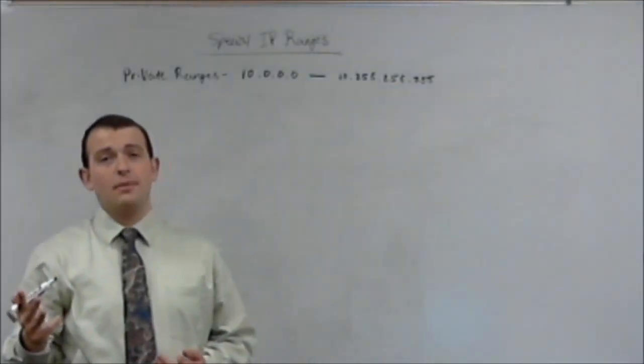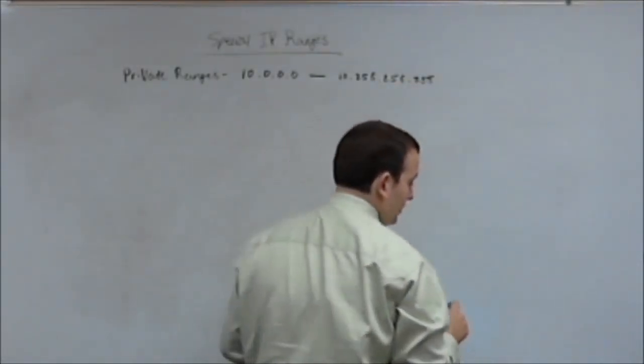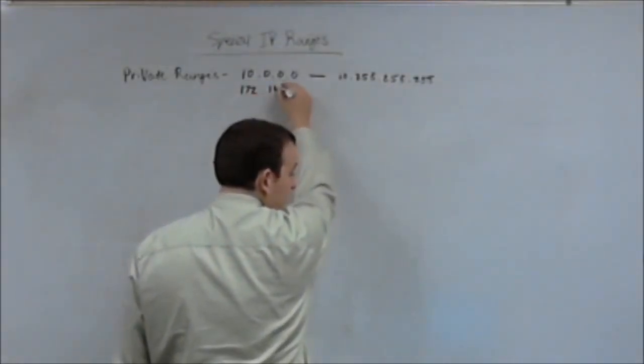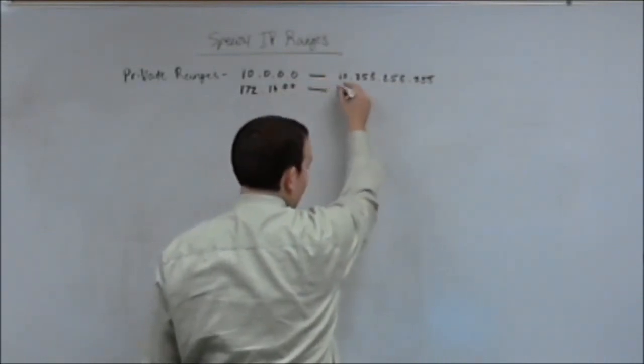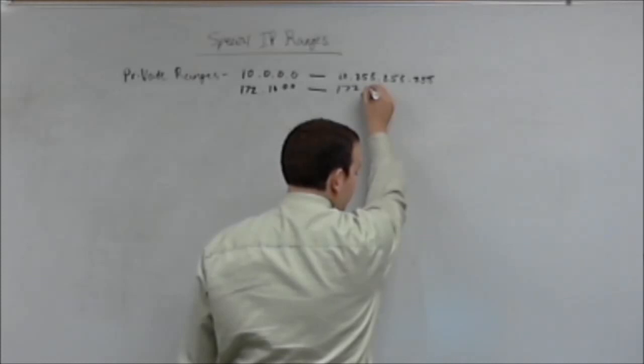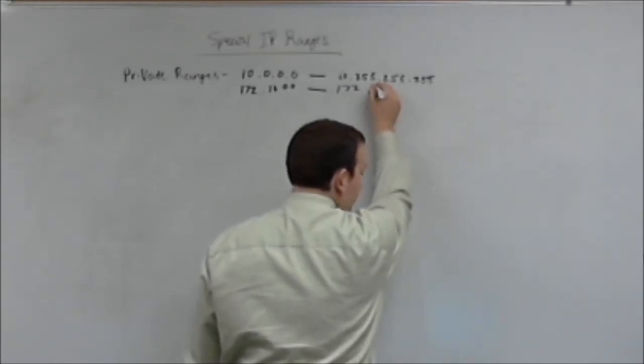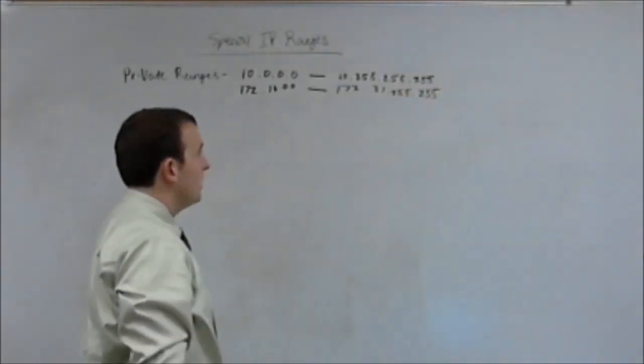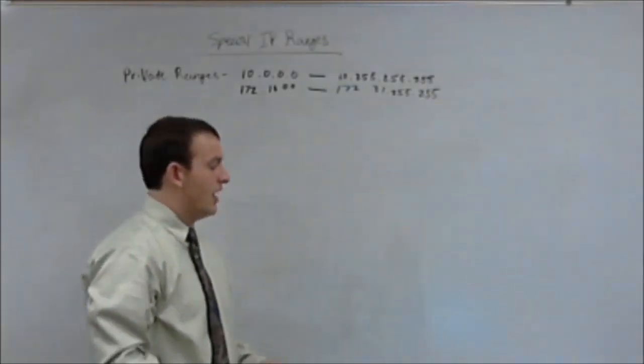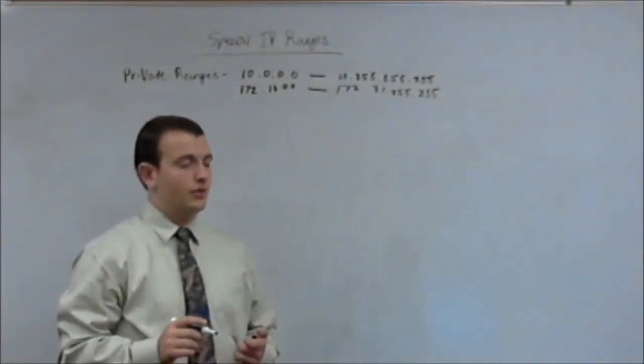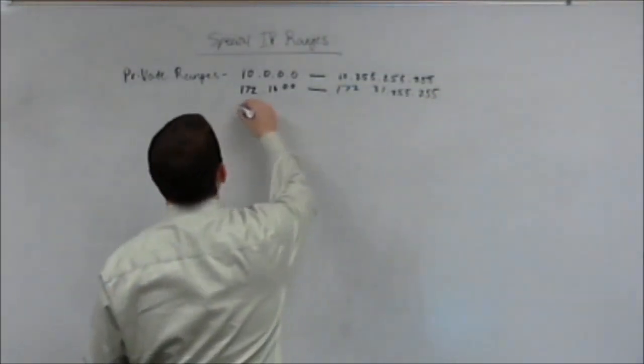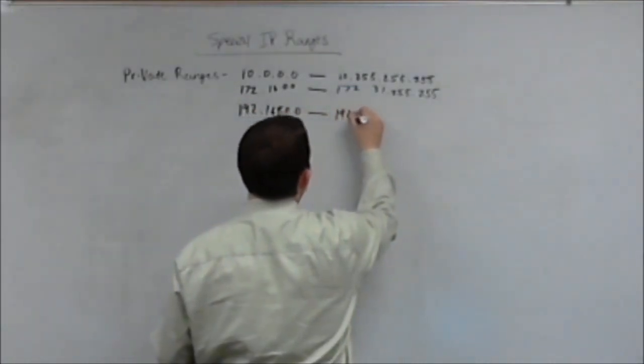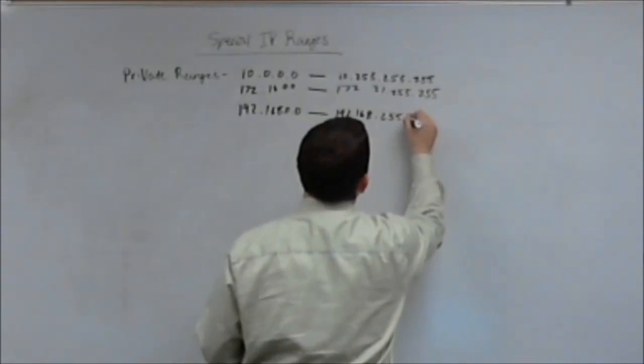There are three private IP ranges. The second private IP range we're going to learn is 172.16.0.0 all the way to 172.31.255.255. So that's your second set of private IP address ranges. The third set of private IP address ranges you're going to have is 192.168.0.0 all the way to 192.168.255.255.